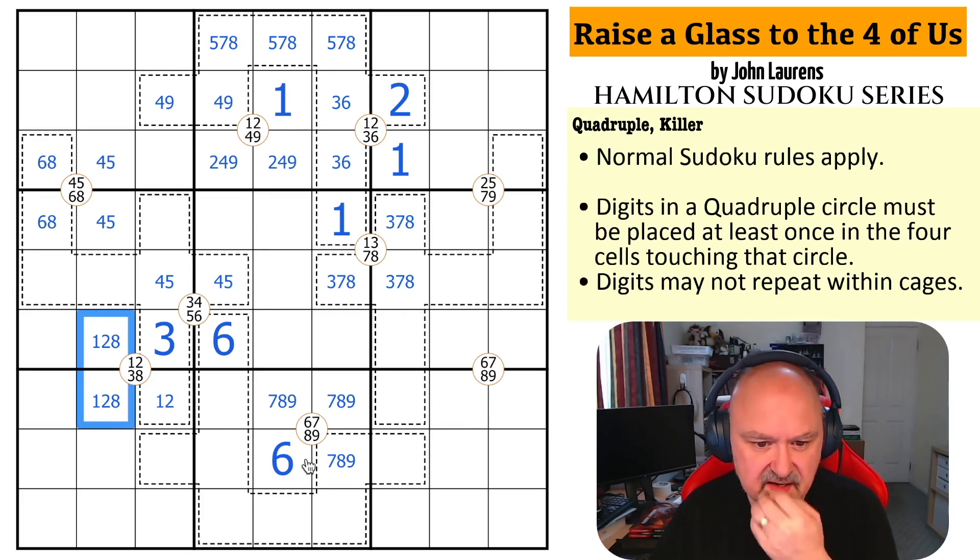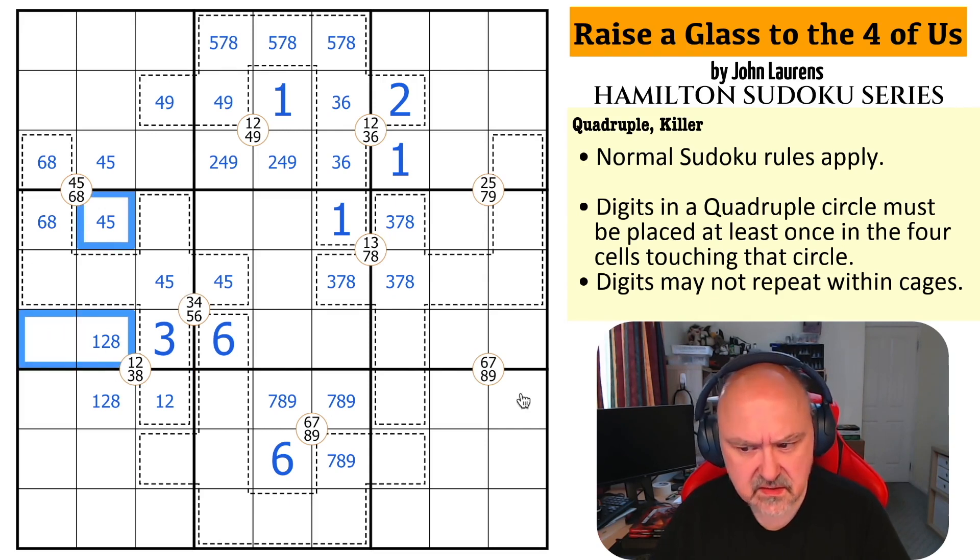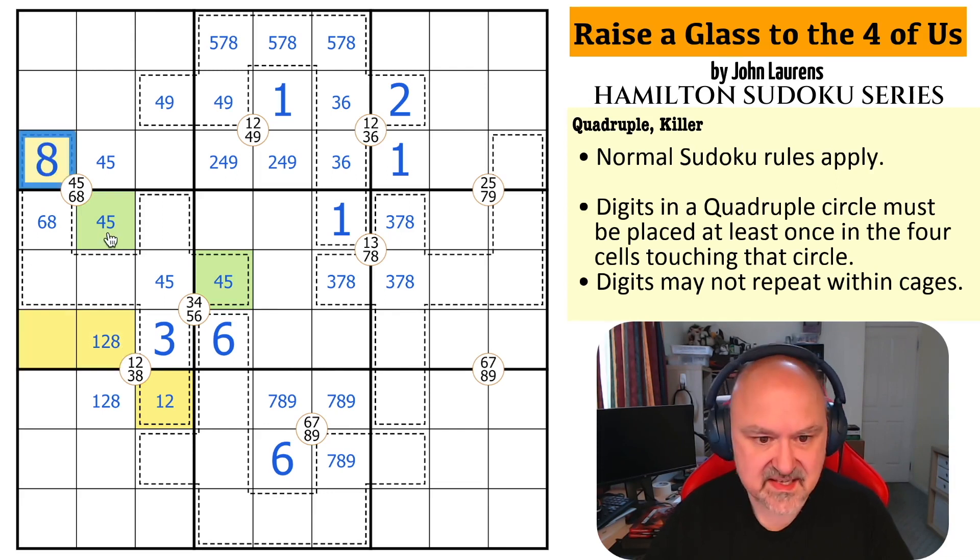This is very smooth. So, 8 is in here now. But, do I have a similar trick? These 3 cells are those 3 cells. Well, that can't be a 4 or a 5. So, those have to be the same. Because, if that was that one, it'd have to be a 4 or a 5. And, I'd have 3 4s or 5s. So, those two are the same. And, neither of those can be a 6. Because, of that 6. So, this can't be a 6. That's an 8.